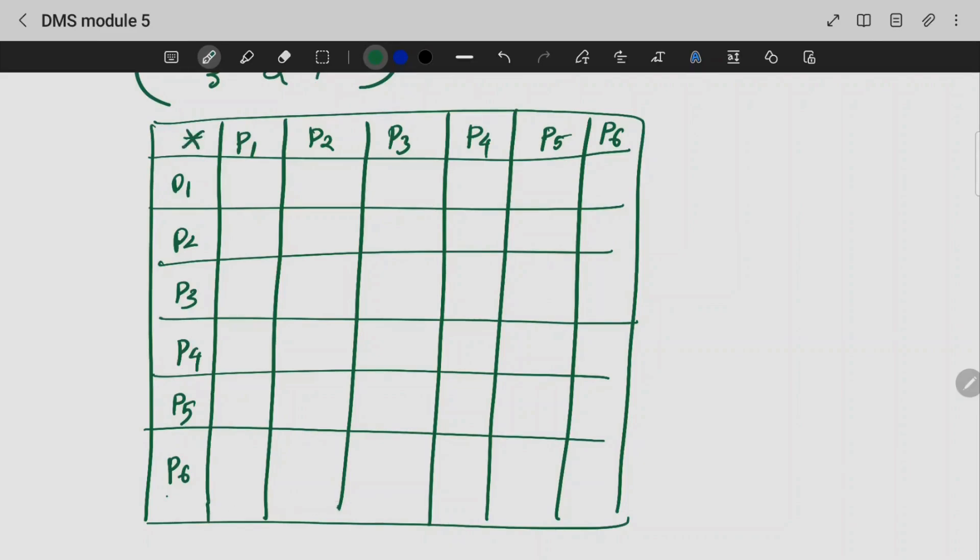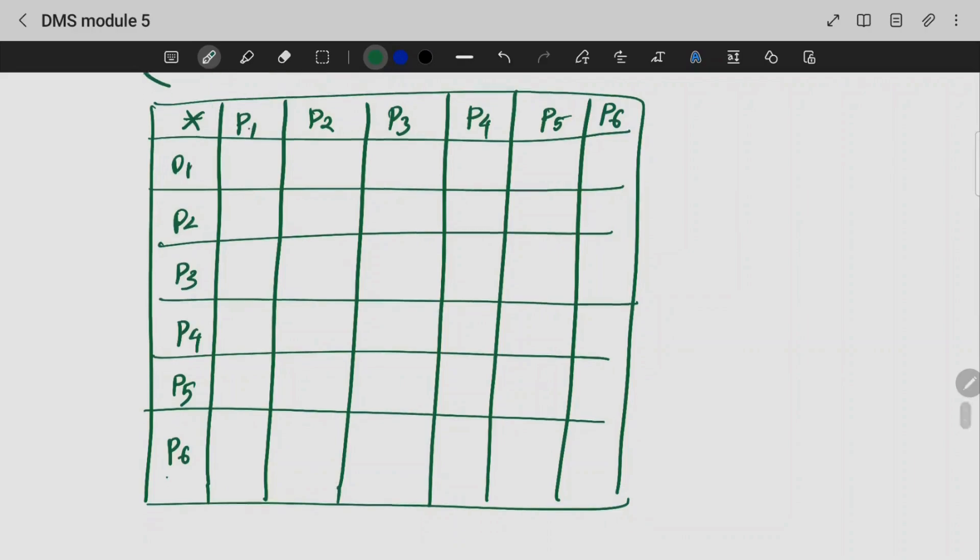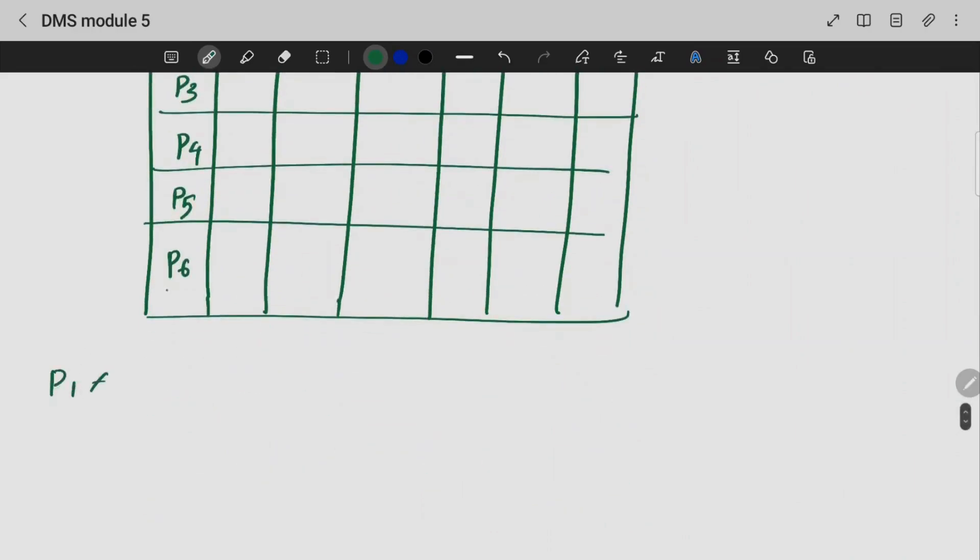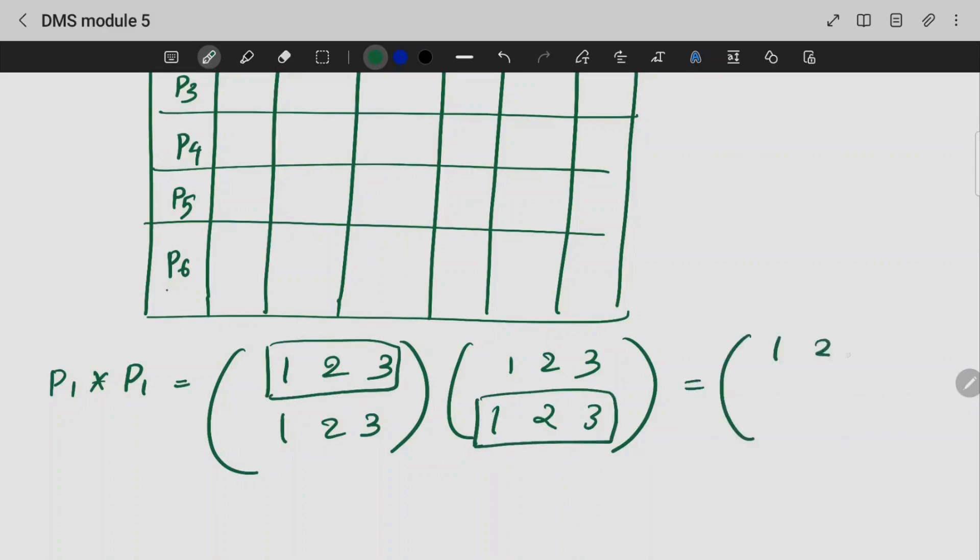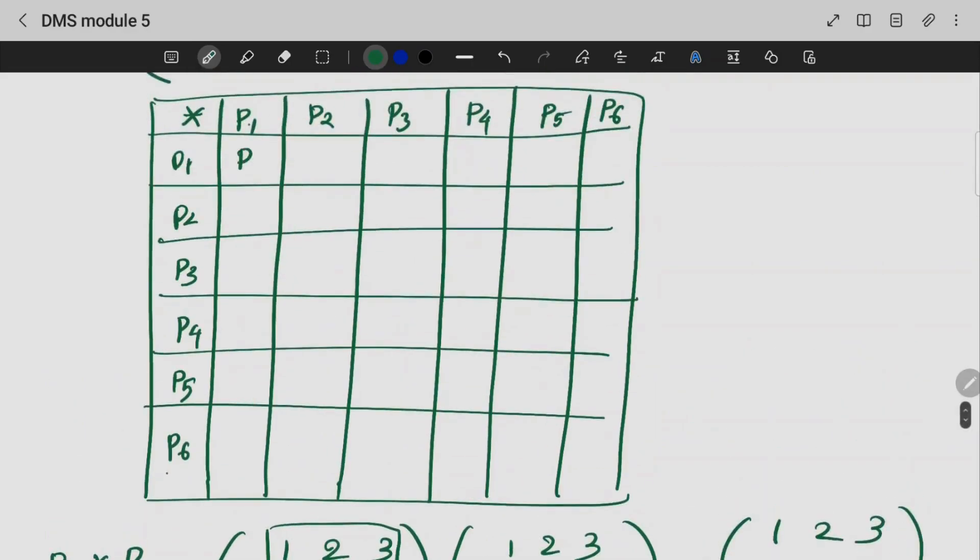This table is filled with P1 star P1. I will say what I am doing: 1, 2, 3, 1, 2, 3 star 1, 2, 3, 1, 2, 3. The first step is the result. That's nothing but P1 only. I will fill in this table.